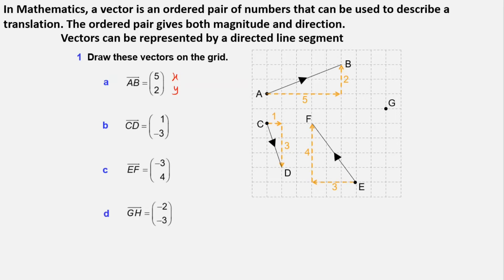Now pause the video and draw vector GH (-2, -3). Since it's minus 2, we go towards left, and since minus 3, we go down. Join GH and this is our vector GH.